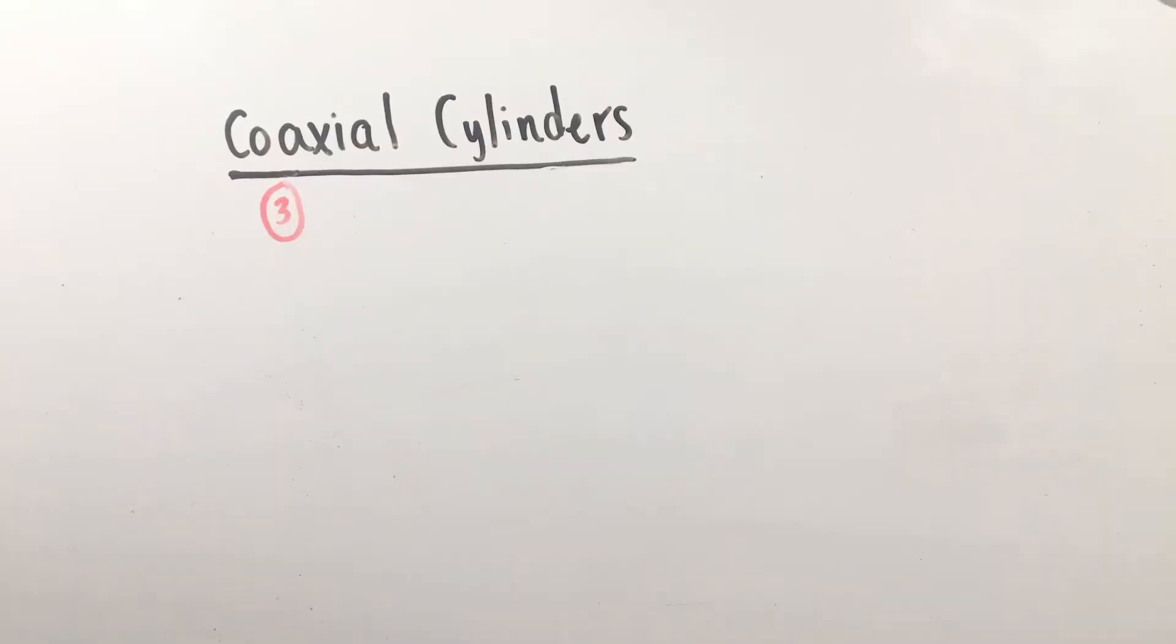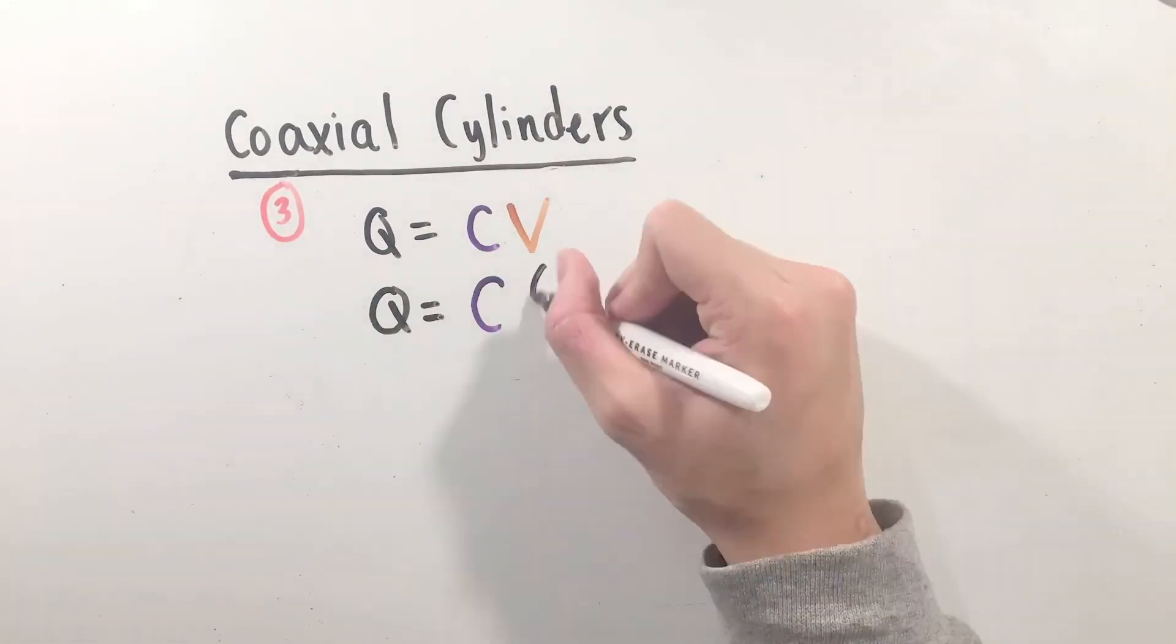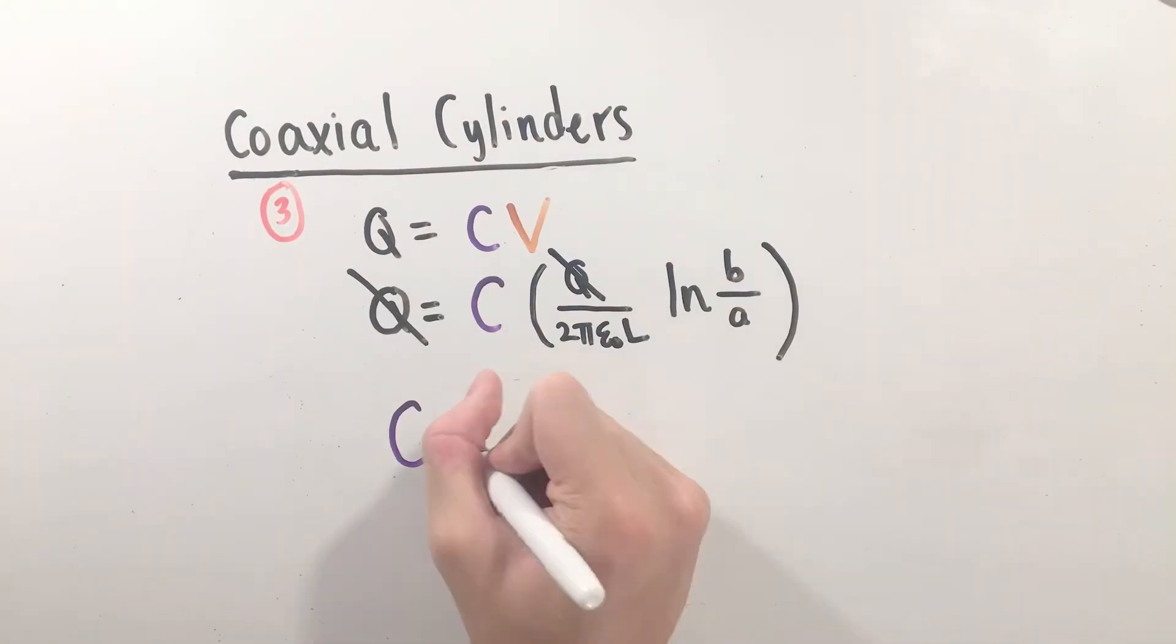Finally, once again using the Q equals CV equation, we can solve for the capacitance due to a coaxial cylindrical capacitor.